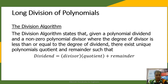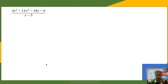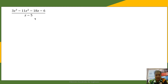We are going to divide 3z cubed minus 11z squared minus 18z minus 6 by z minus 5. As you may have noticed, our divisor is not a monomial anymore — this is a binomial. The divisor has two terms.